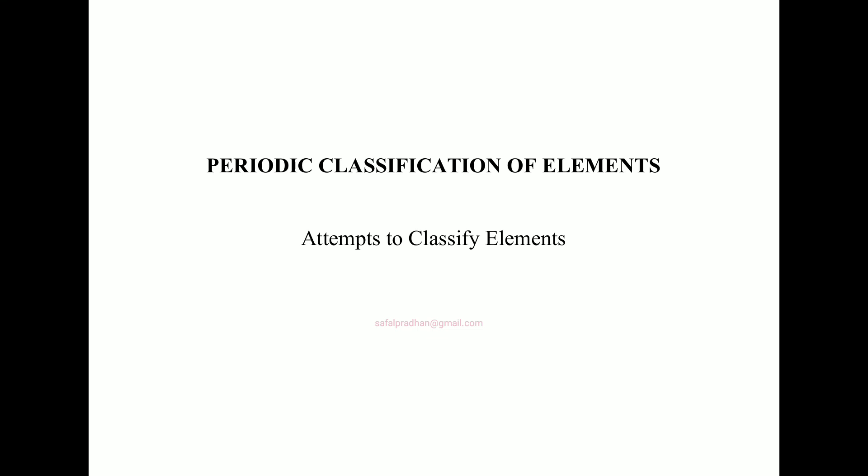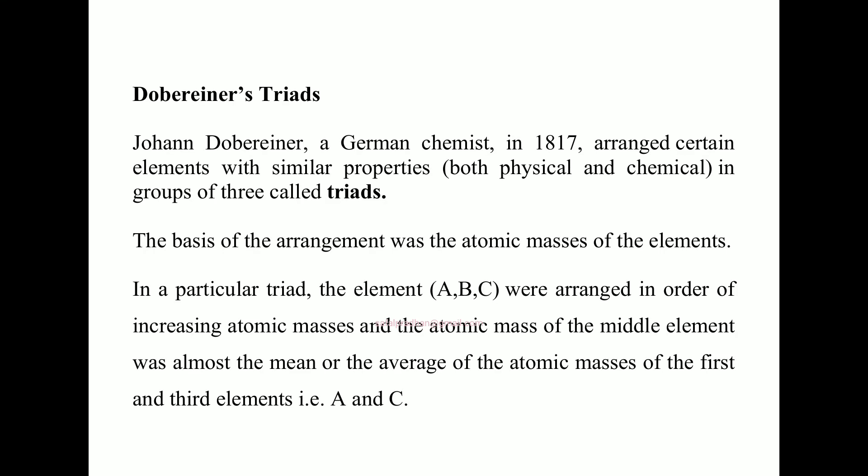Historically, different scientists tried to classify elements. The first scientist was Dobereiner — Johann Dobereiner, a German chemist — who in 1817 tried to make groups. He grouped similar elements into sets of three, called triads — three elements in each group. The basis of his arrangement was atomic mass. He arranged elements in increasing order of atomic mass.